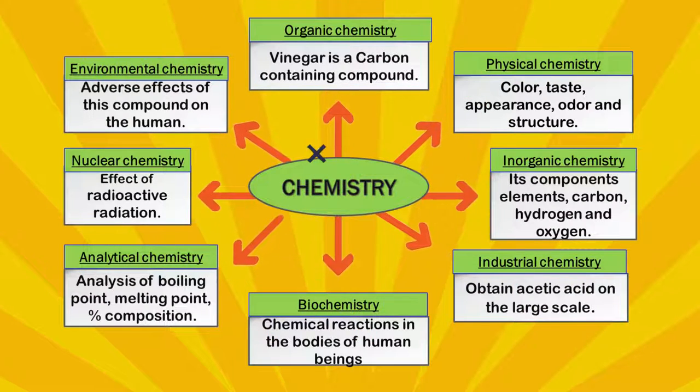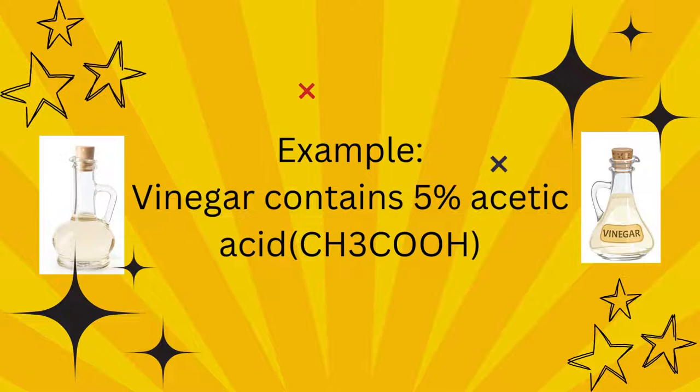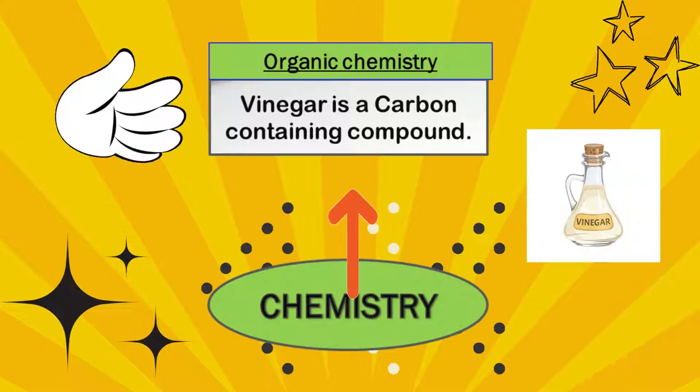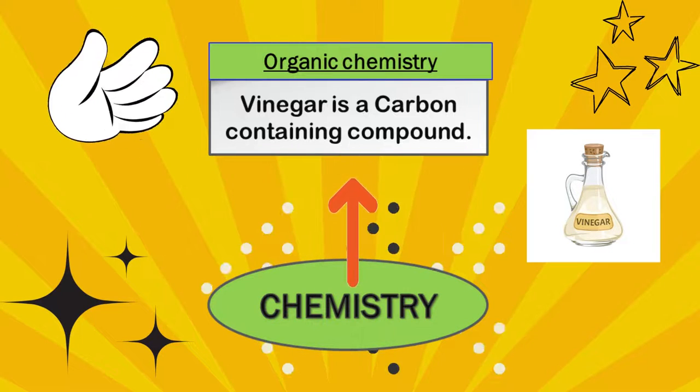Question: How can we identify any branch of chemistry? Example: Vinegar contains 5% acetic acid (formula CH3COOH). Vinegar is a carbon-containing compound, therefore it's included in organic chemistry.